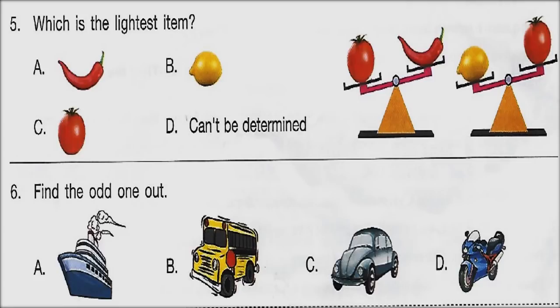Question 6: Find the odd one out. Look at the given options — this is related to transport and you have to find the odd one out.